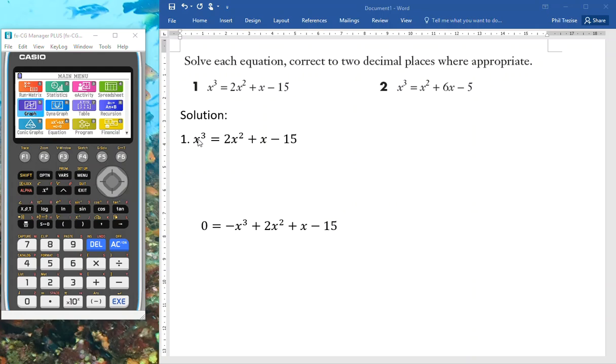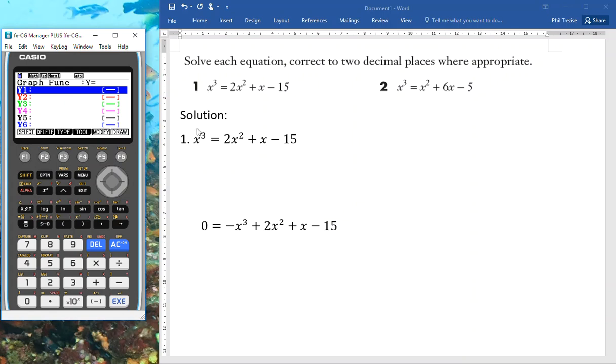So the first step, here we go. I am going to move into the graphing app, and I will plot the function on the left-hand side of the equals, x cubed. And then in my second plot, I will do the function on the right-hand side, the quadratic here, 2x squared plus x minus 15.